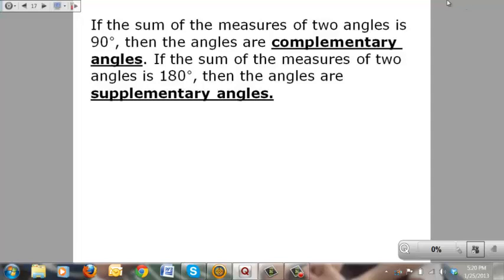So, simply put, if the two of them together make a right angle, 90 degrees, they're complementary. If the two of them together form a straight line, 180 degrees, then they're supplementary angles.